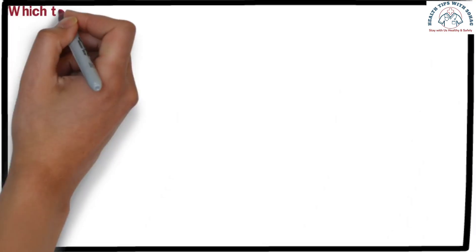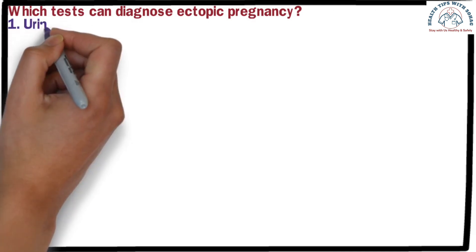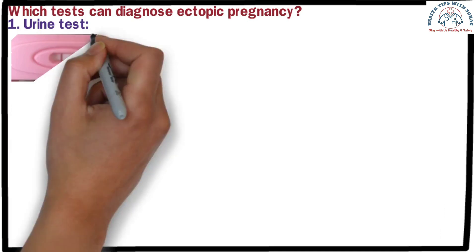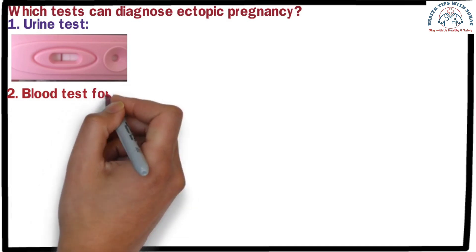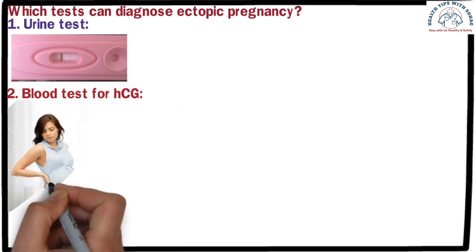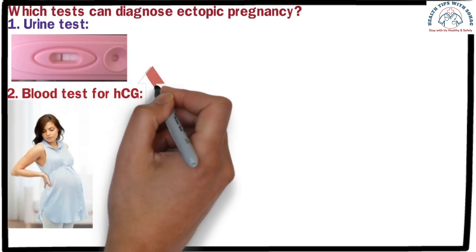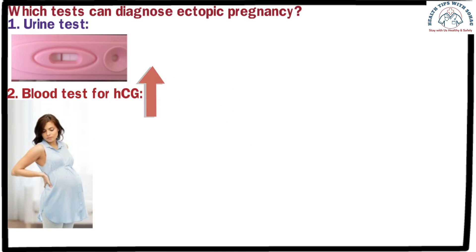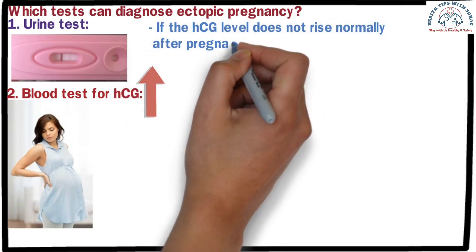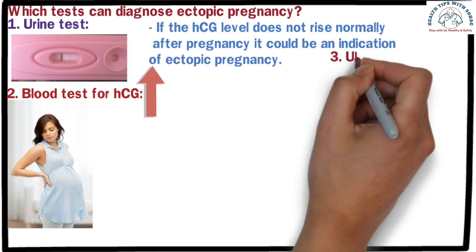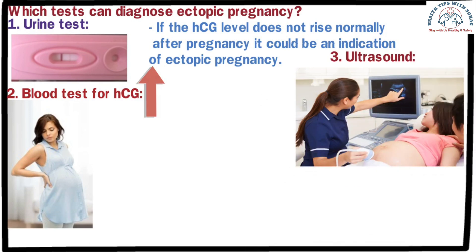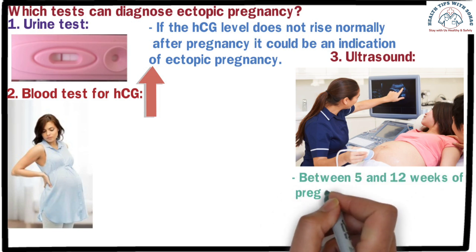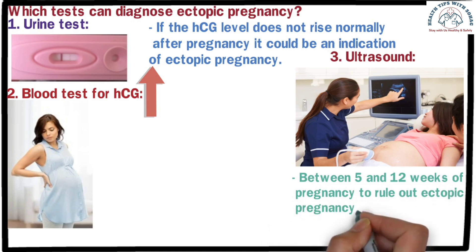Which tests can diagnose ectopic pregnancy? 1. Urine test — if you see one dark line and one faint line on the test strip 10 days after missing your period, it may be a sign to consider the possibility of an ectopic pregnancy. 2. Blood test for HCG — when a woman becomes pregnant, the level of HCG (human chorionic gonadotropin hormone) increases. If the HCG level does not rise normally after pregnancy, it could indicate ectopic pregnancy. 3. Ultrasound — the most reliable test. Through an ultrasound you can confirm whether ectopic pregnancy is present. It is recommended that all pregnant women undergo at least one ultrasound between 5 and 12 weeks of pregnancy to rule out ectopic pregnancy.